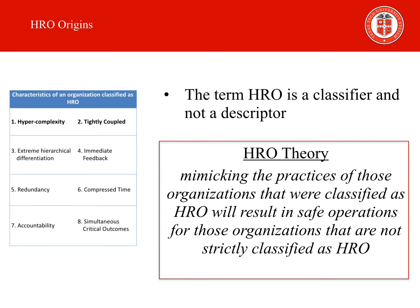It is important to note that the term High Reliability Organization, or HRO, is a classifier and not a descriptor. It's not correct to say that your organization wants to be a high-reliability organization, because whether or not an organization is in a high-risk industry and fully meets these eight characteristics is not something that is aspired to. What one really means to say is that their organization wants to achieve higher levels of organizational safety by mimicking the practices observed in high-reliability organizations, which is the basis for HRO theory.